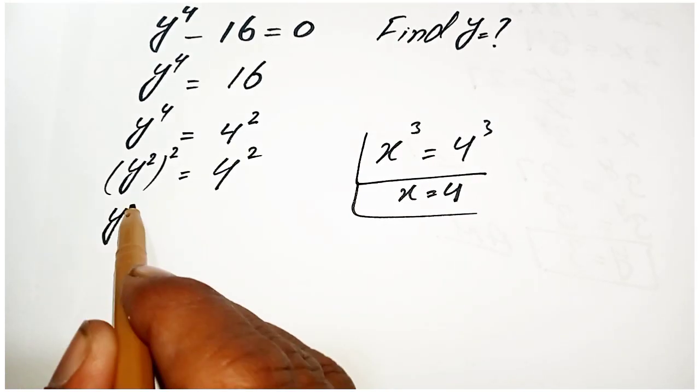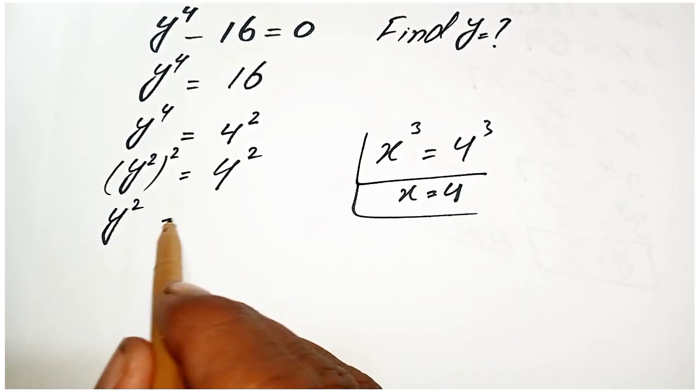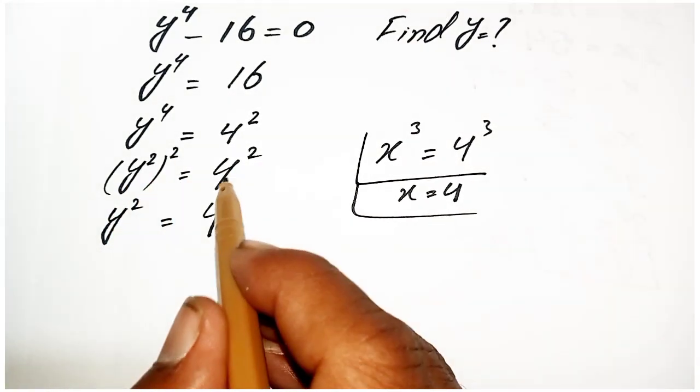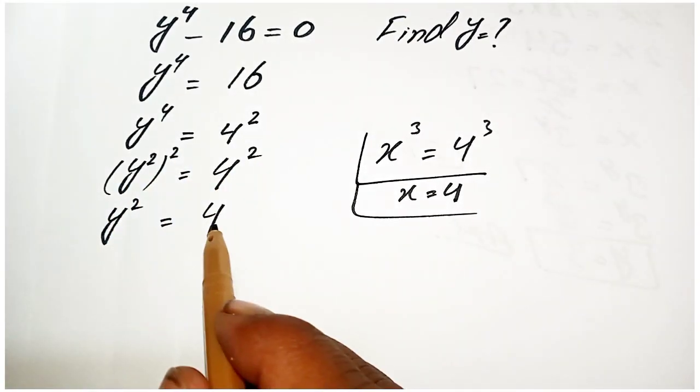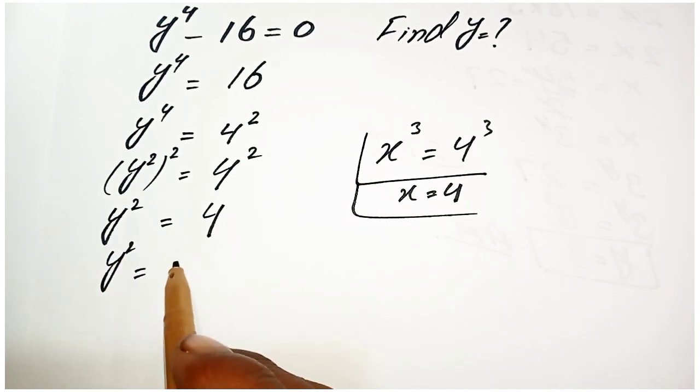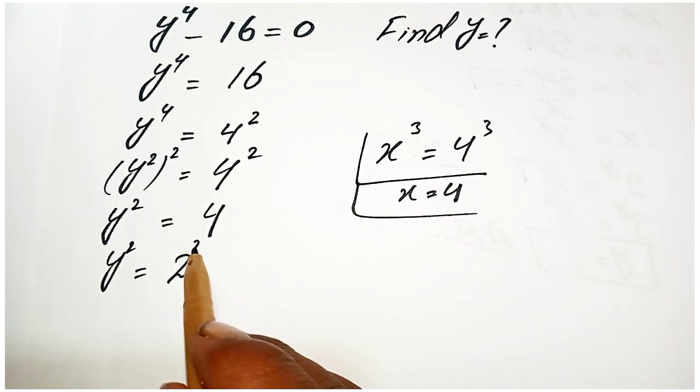Since the power is the same, we write y square equals 4. Now again we can write y square, and this 4 as 2 power 2.